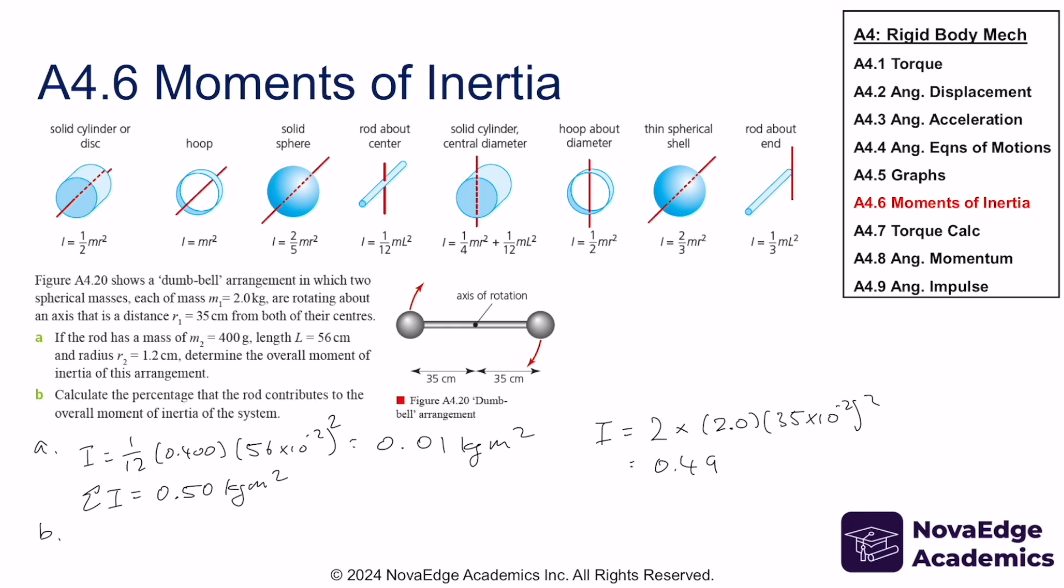So the total inertia, moments of inertia is 0.50. Calculate the percentage that the rod contributes to the overall moment of inertia of the system. Well, that's just simply equal to this, which is equal to 2%.